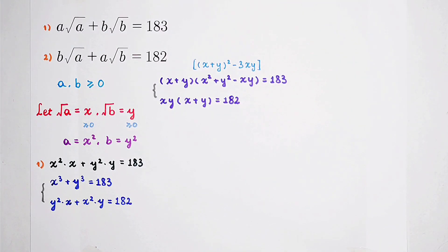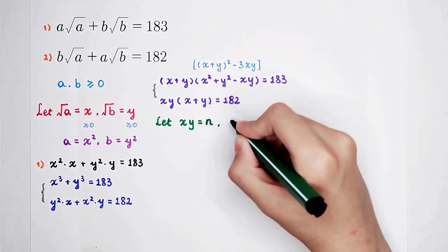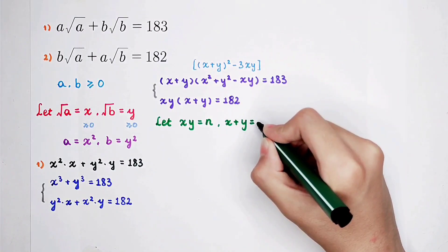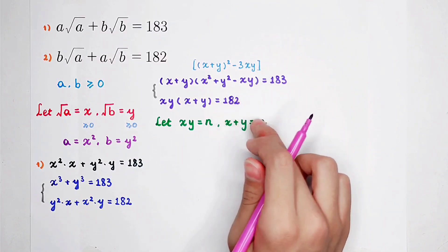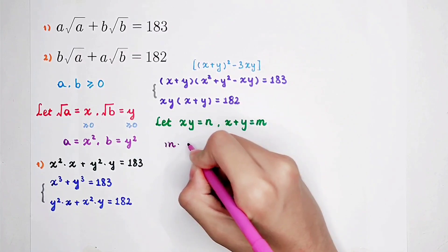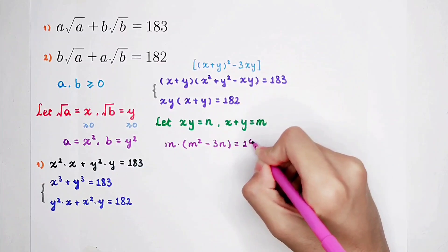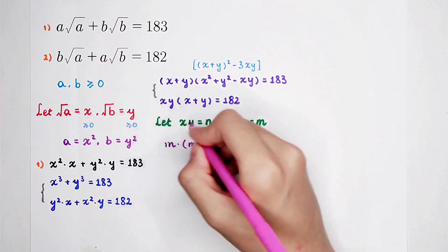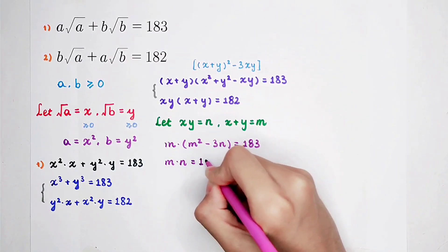Now we can do a substitution again. Let m equal x plus y, and n equal xy. These two equations become equations about m and n. From the first equation: m times (m squared minus 3n) equals 183. The second equation: m times n equals 182.